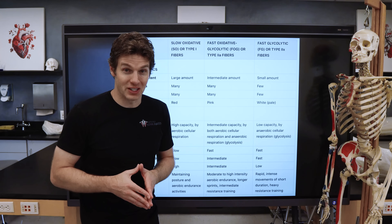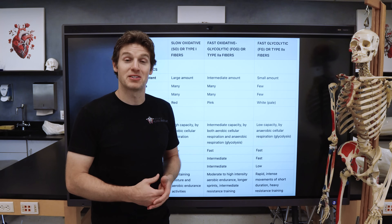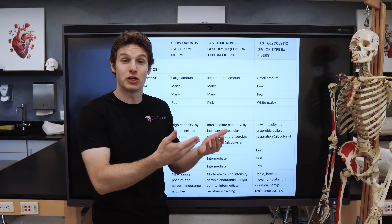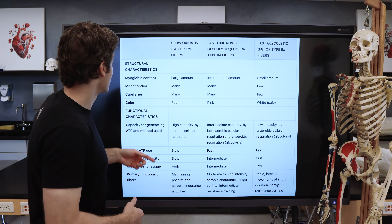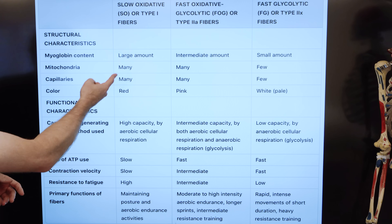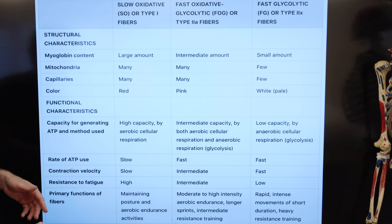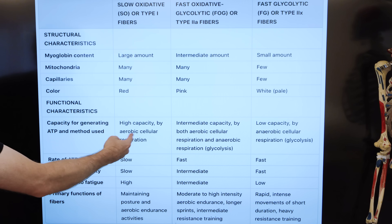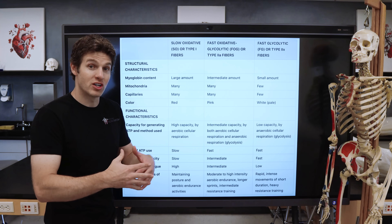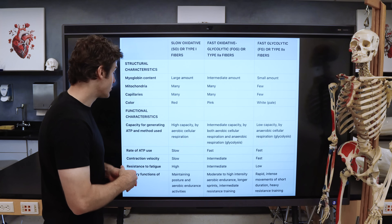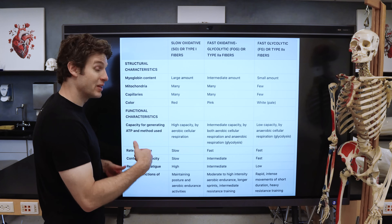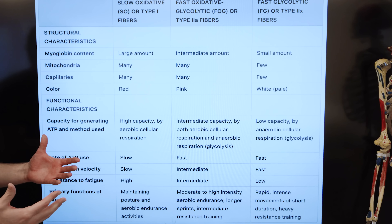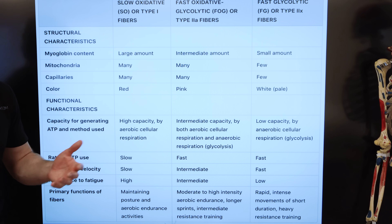Let's summarize using a chart that highlights the characteristics and differences of each fiber type. Slow oxidative or type 1 fibers have a large amount of myoglobin, many mitochondria and capillaries, and that red color. They have a high capacity to generate ATP through aerobic respiration, but since aerobic respiration takes more steps it takes more time — meaning their rate of ATP use is slower and their contraction velocity is slow. However, they have extremely high resistance to fatigue and are great at maintaining posture and aerobic endurance activities.